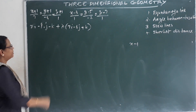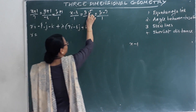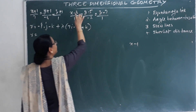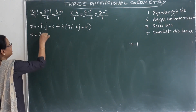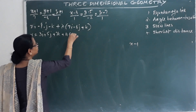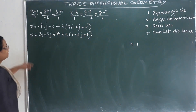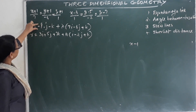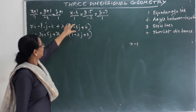The second line's vector equation is r equals 3i plus 5j plus 7k plus mu times (i minus 2j plus k). Looking at the two vector equations, the direction vectors are not the same, meaning the lines are not parallel. The direction vectors b1 and b2 are different.